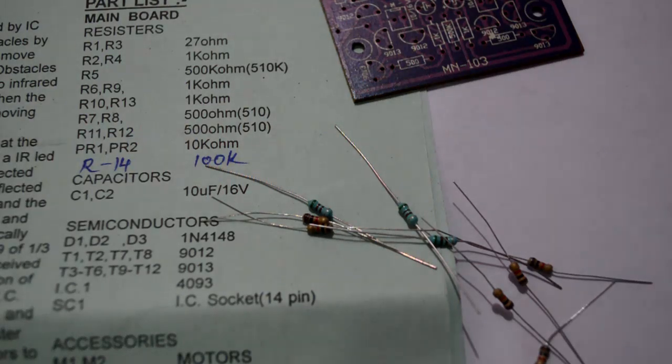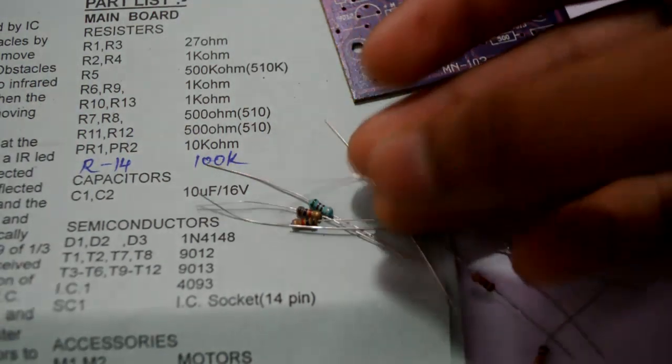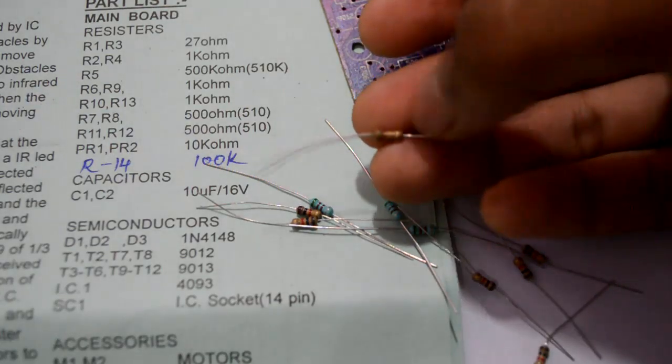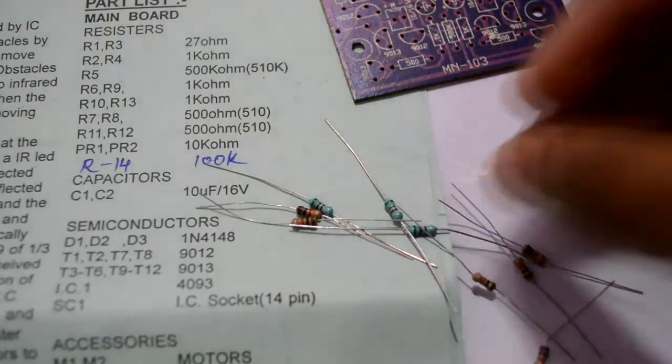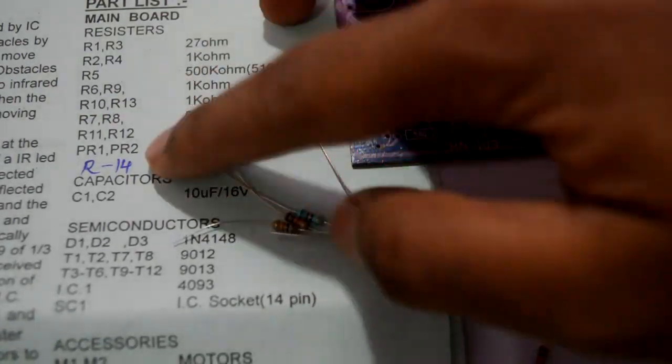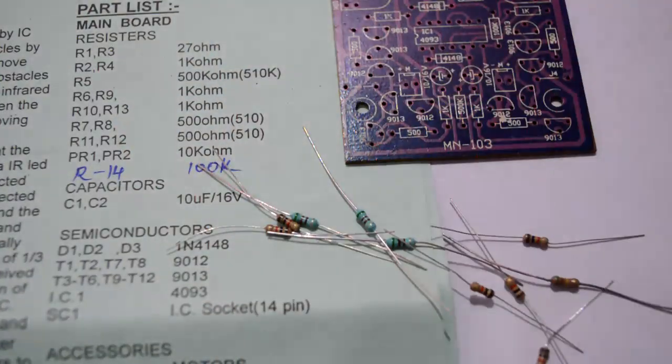Before you get the soldering iron in your hand, make sure you scrape off the legs of all the components because there is a tiny coating which doesn't allow these components to get soldered on. Let's start with the resistors first, then we shall move to the capacitors and so on.